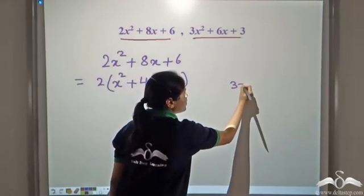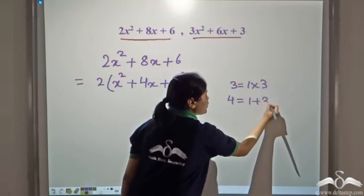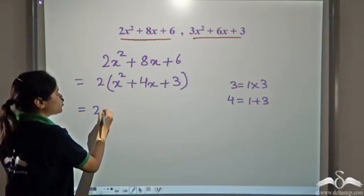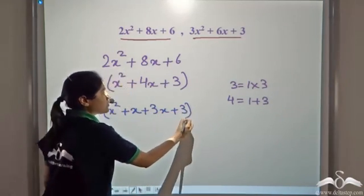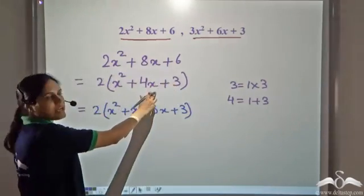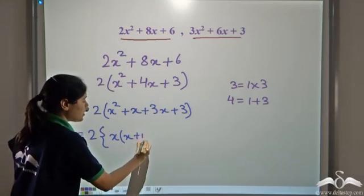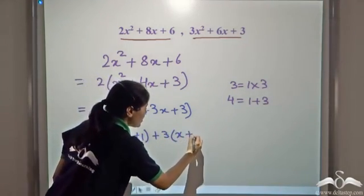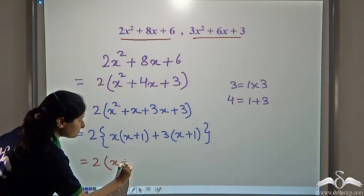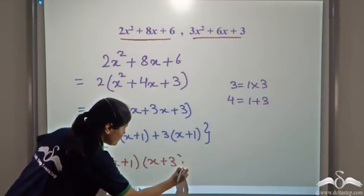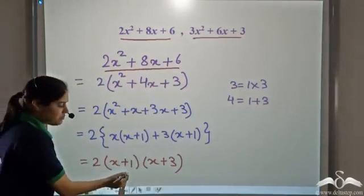We can factorize x² + 4x + 3 by splitting the middle term. Since 1 × 3 = 3 and 1 + 3 = 4, we write 2(x² + x + 3x + 3). Grouping gives 2[x(x + 1) + 3(x + 1)], which equals 2(x + 1)(x + 3). So the factorized form of 2x² + 8x + 6 is 2(x + 1)(x + 3).